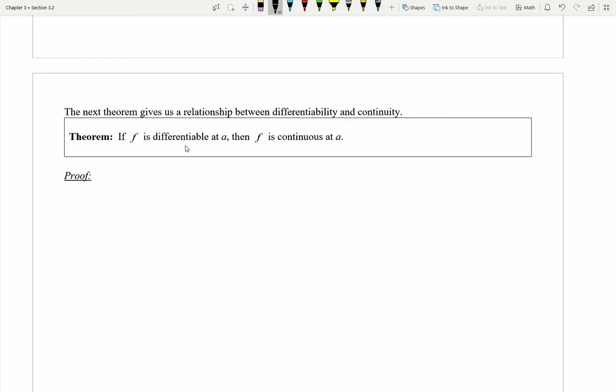Specifically, here's what we have. If a function f is differentiable at a, that is, if a function has a derivative at a, you can calculate the slope of its tangent line at a, then guaranteed automatically, no questions asked, the function will be continuous at a. That is, the graph will be connected there.